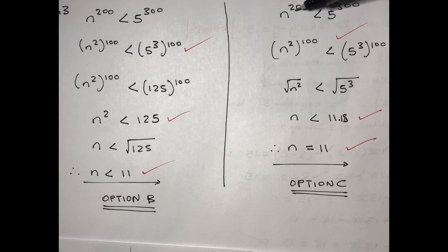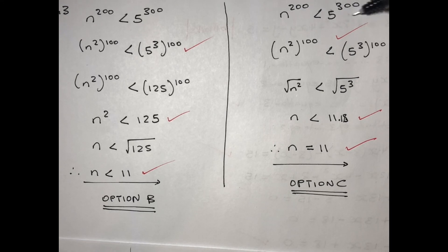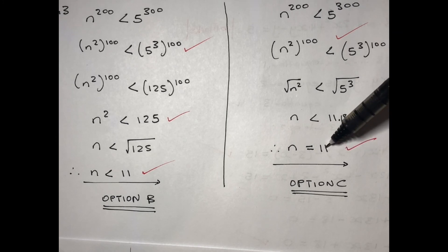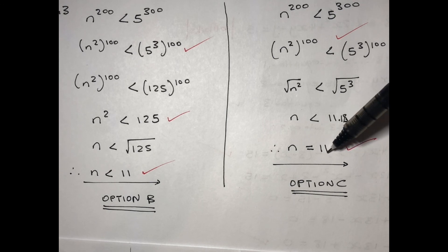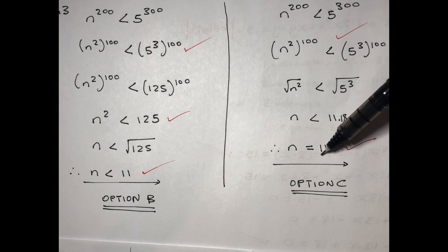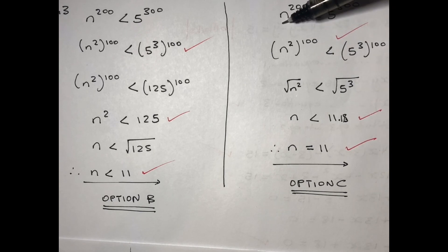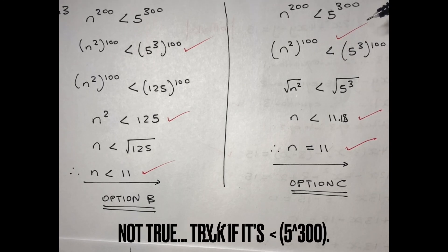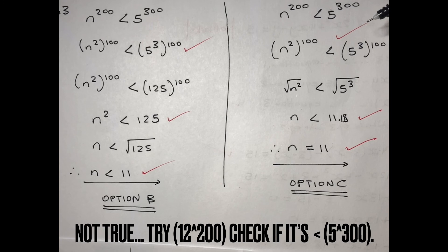So 11 is the highest whole number where n to the power 200 is less than 5 to the power 300. That means if you use any whole number greater than 11, the inequality no longer holds.